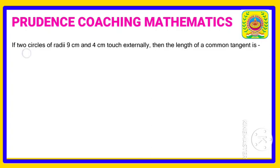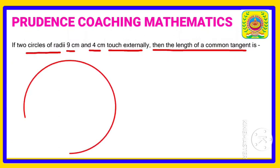If two circles of radii 9 centimeters and 4 centimeters touch externally, then the length of the common tangent is... So here, as you can see, if this is a bigger circle of radius 9 centimeters and this is